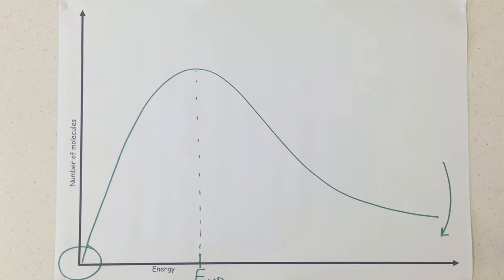The area under the curve represents the total number of molecules, so if you literally had a count of every single molecule underneath this curve, you'd have how many molecules there are in the whole system.